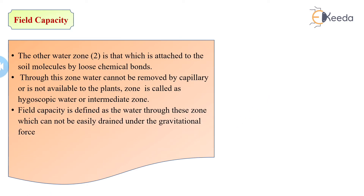After studying this, we can define field capacity in another manner. It is defined as the water through these zones which cannot be easily drained under gravitational force. Field capacity is generally taken as two to five days — we can express this in days and it is adopted for two to five days.